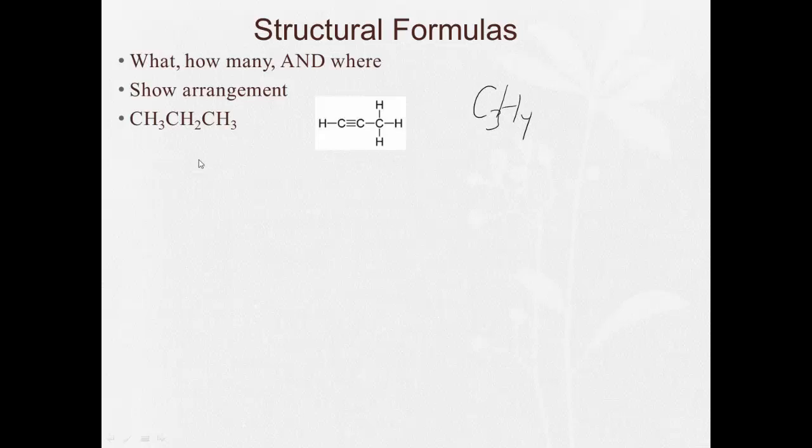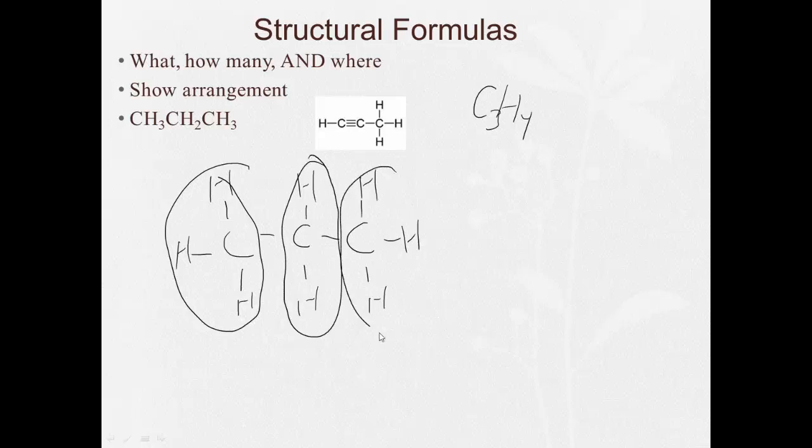It could also be written as CH3, or another way of writing a structural formula would be CH3CH2CH3. And this would be CH3CH3. This carbon has two hydrogens, this carbon has three hydrogens, so we have CH3CH2CH3. This type of structural formula would be referred to as a condensed structural formula.